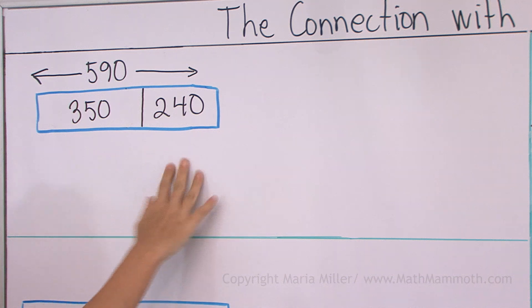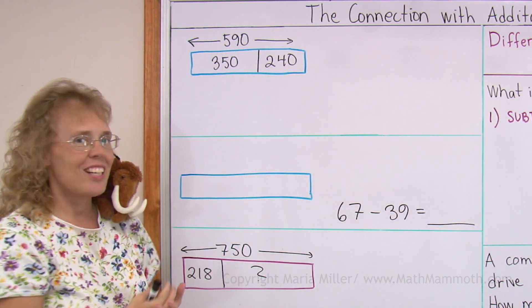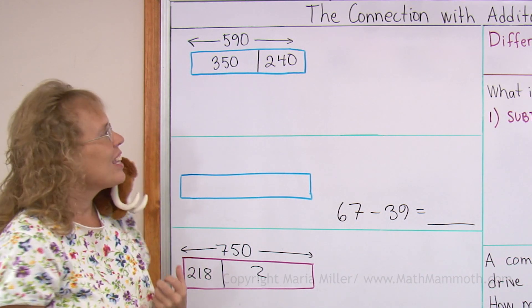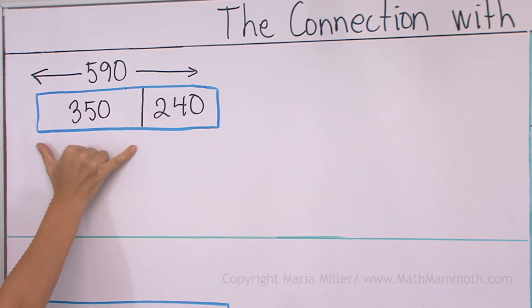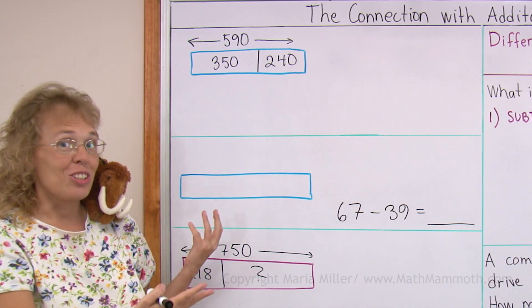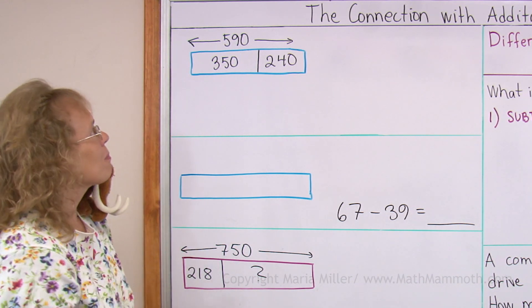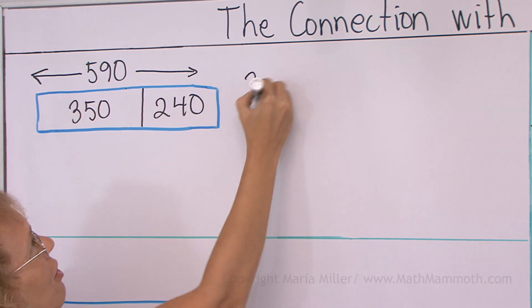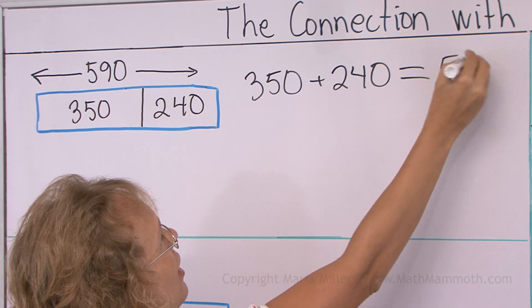I drew here what I call a bar model. You can imagine like a board or a stick that is 590 units long, and then it is cut into two pieces. One of them would be 350 units long and this one would be 240 units long. So in total they make 590 units long board. Now we're going to write an addition from this, which is of course 350 plus 240 equal 590.